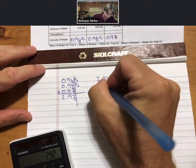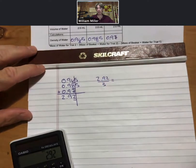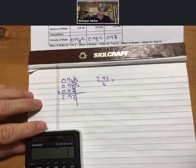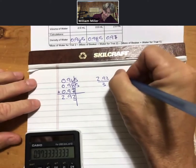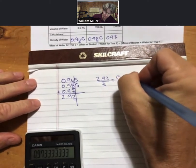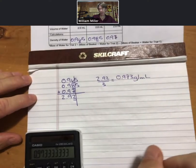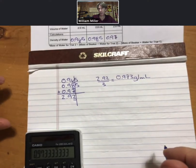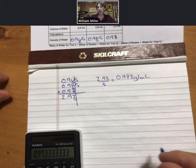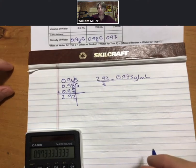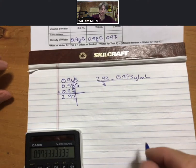And we get 0.973 grams per milliliter as our average. And what our calculations are telling us is that all three of those digits are significant.